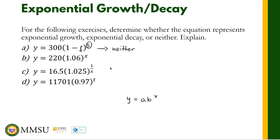For letter B, we have y is equal to 220 times 1.06 raised to x. The independent variable is in the exponent, so that's correct. Looking at the base, 1.06 is greater than 1, which means we have an exponential growth.